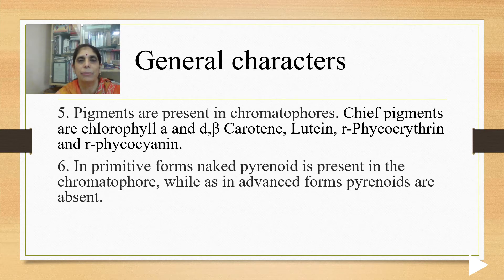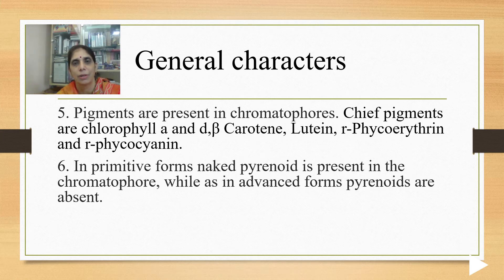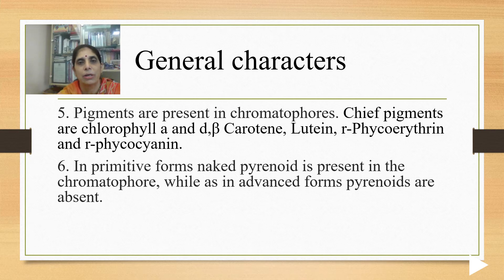Pyrenoids indicate that starch is being produced. You have seen pyrenoids in Chlorophyta — for example, in Spirogyra the spiral chloroplast has round bodies in between, called pyrenoids. A pyrenoid is a proteinaceous body surrounded by starch plates, but here in red algae there are no starch plates — the pyrenoids are naked. They are present in primitive forms; in advanced types the pyrenoids are absent.